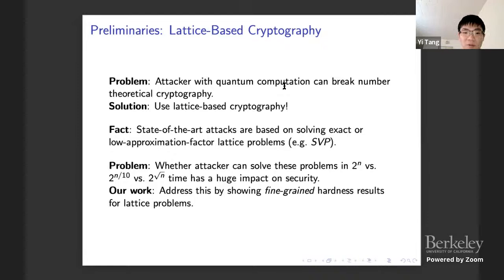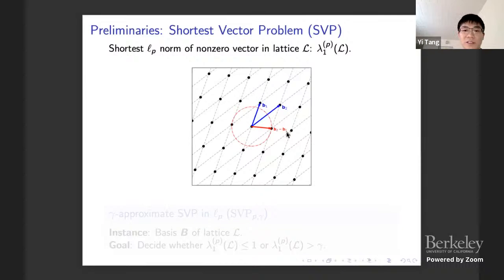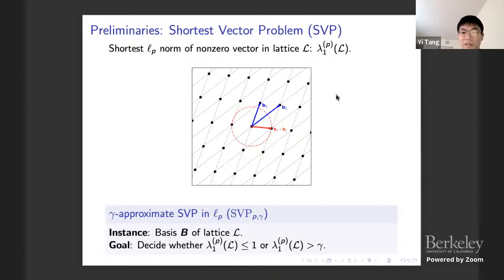Our work addresses this by showing fine-grained hardness results for lattice problems. One problem studied is SVP. The key geometric property is lambda_1 of a lattice L, defined as the shortest L_p norm of non-zero vectors in the lattice. In our example, the red vector b2 minus b1 is the shortest non-zero lattice vector, so its length is lambda_1. The gamma-approximate SVP problem in L_p norm asks: given a lattice, decide whether lambda_1 is at most 1 or at least gamma.